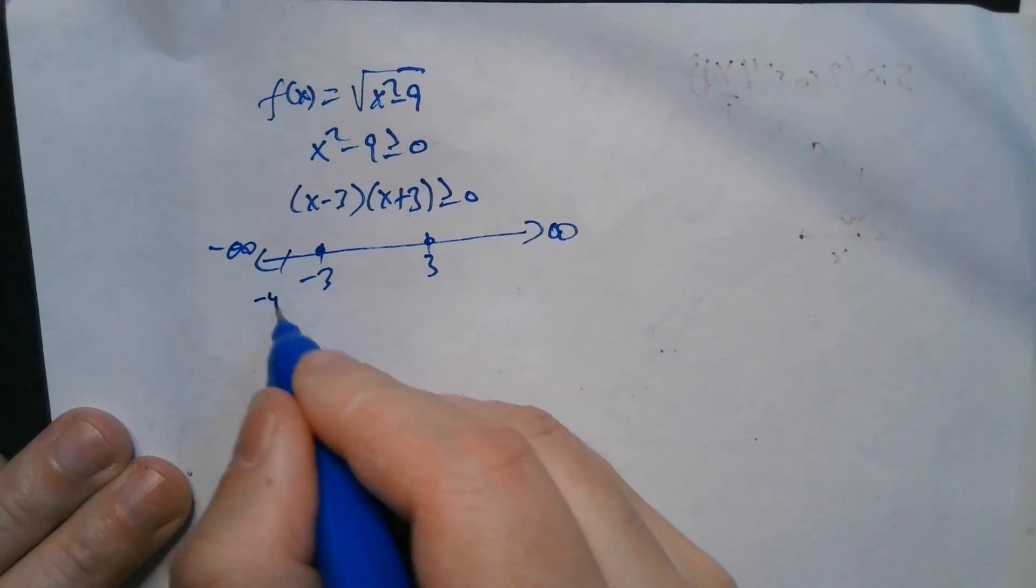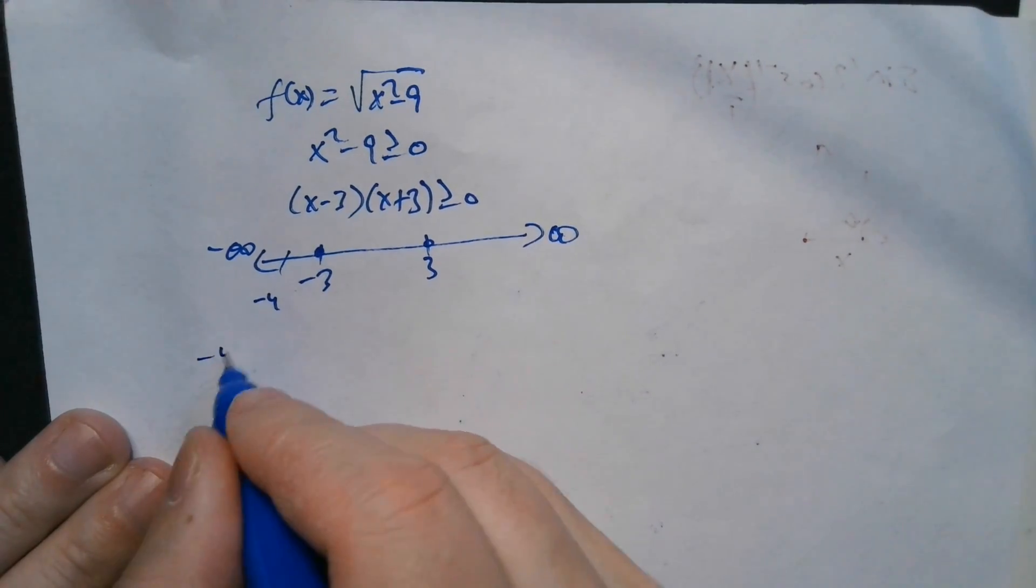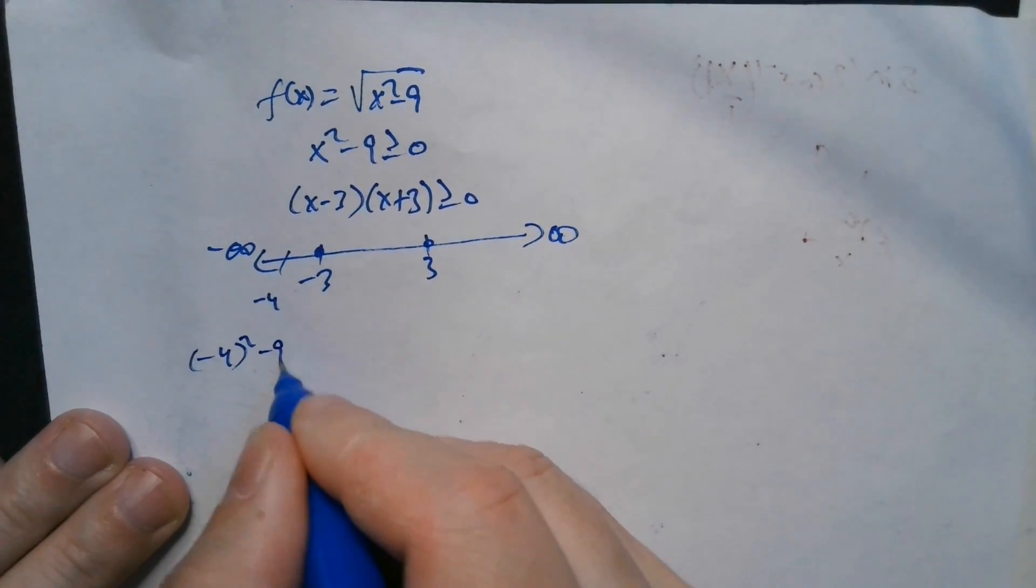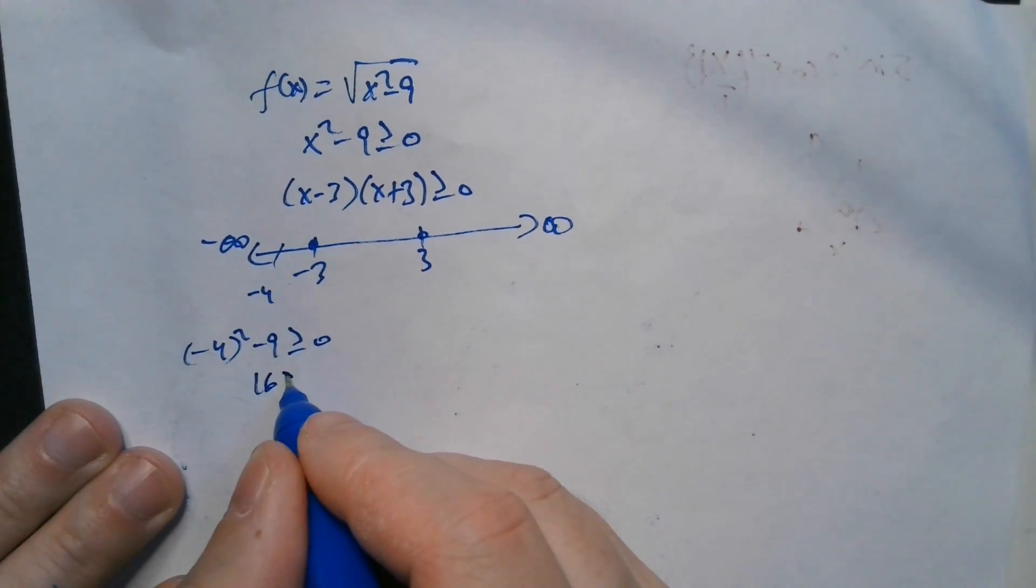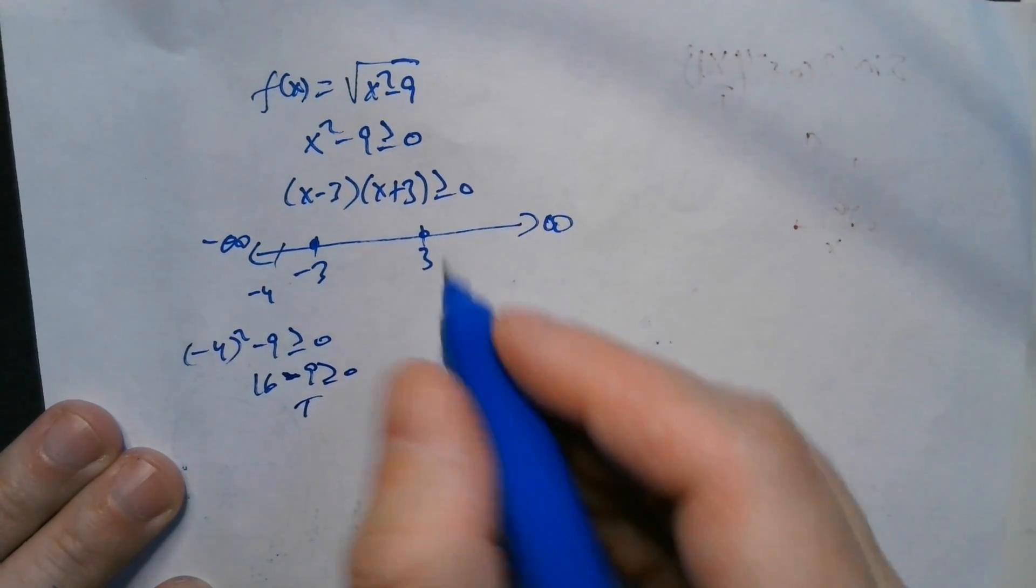For example, choose negative 4 right here. So you plug it into this expression. So negative 4 squared minus 9, is this greater than or equal to 0? I'm going to check that. So this is 16 minus 9 greater than or equal to 0. That's T for true.